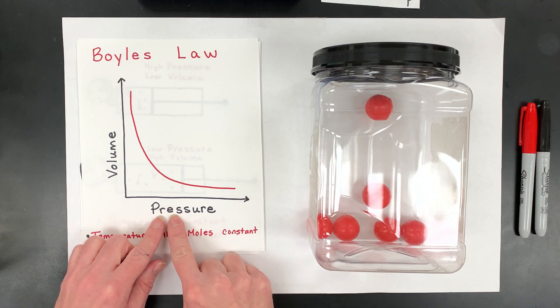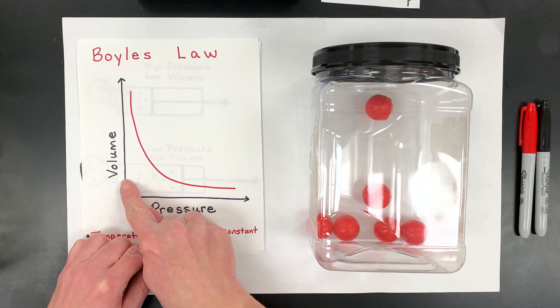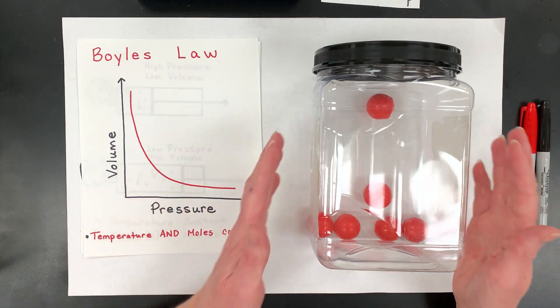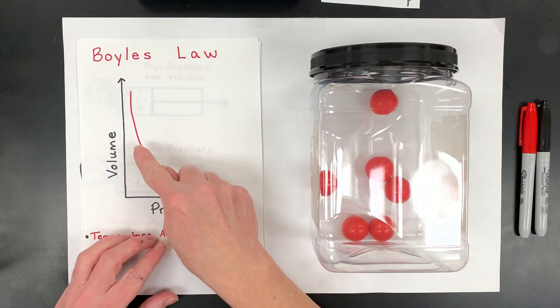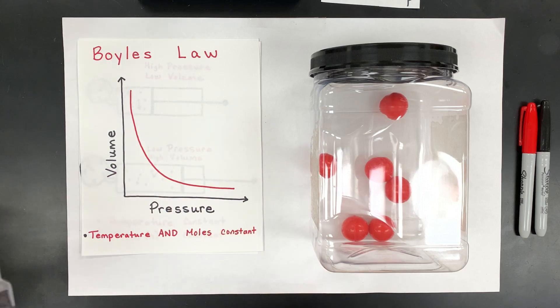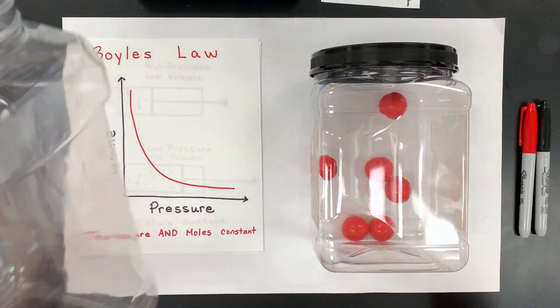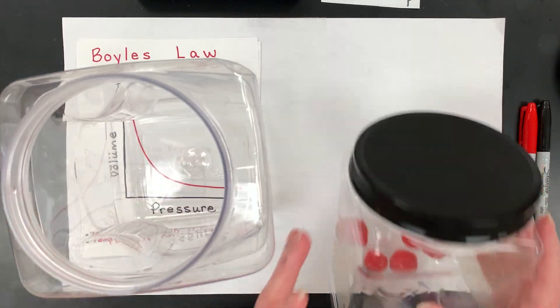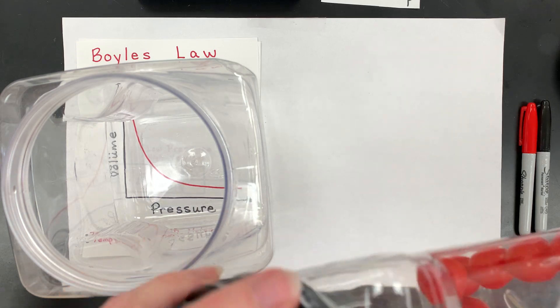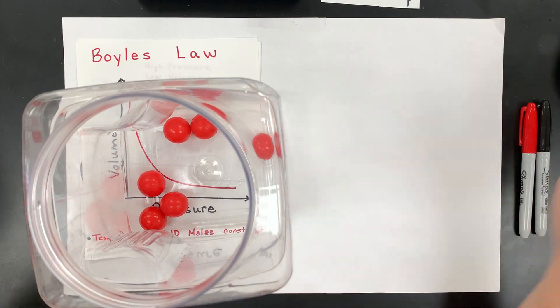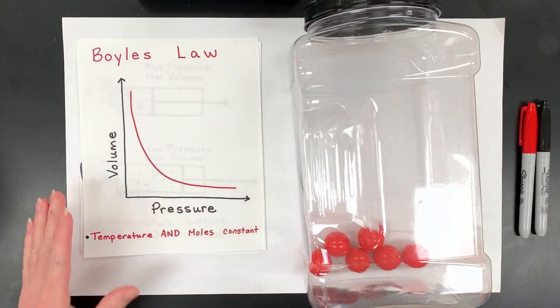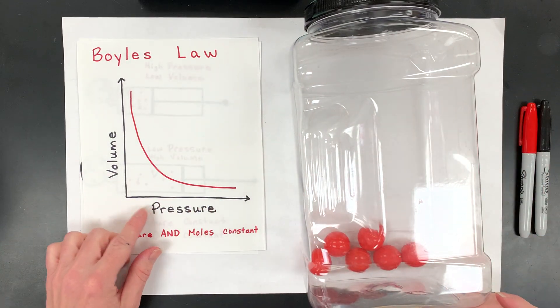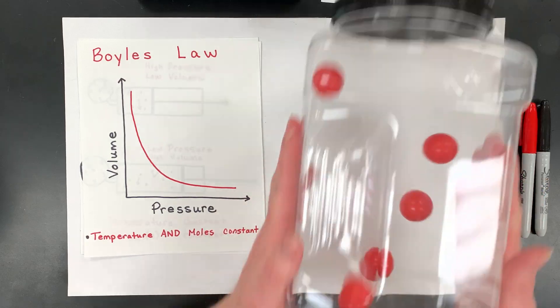So what happens is at a low volume, which I have maybe right now, my pressure is high, meaning the collisions with the walls of the container. And if I decrease the pressure, the volume would have to go up, or if I have the volume go up, which is what I'm kind of modeling here, and I keep the moles and the temperature the same, what's going to happen is if the volume goes up, the pressure should go down.